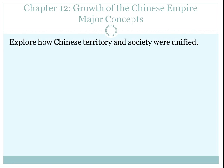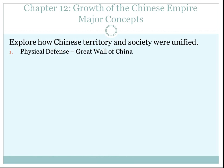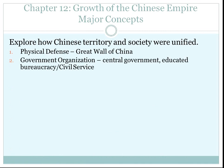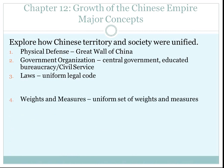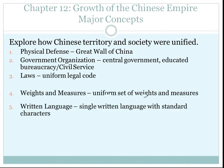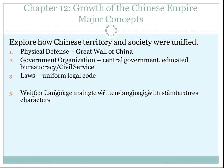First question is: how does Chinese society and territory become unified? First, physical defense — the Great Wall of China was built to unify them. Second is government organization: you had central government, educated bureaucracy, and civil service. It was also unified through laws and a uniform legal code, and by uniform weights and measures across the entire country. It was also unified by written language across the entire country.